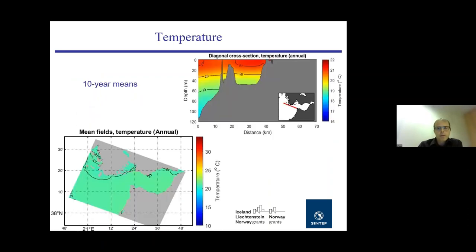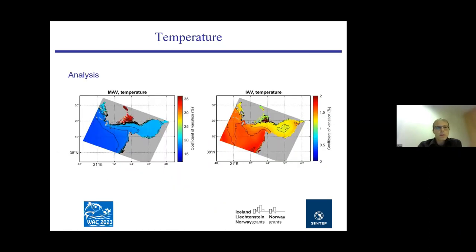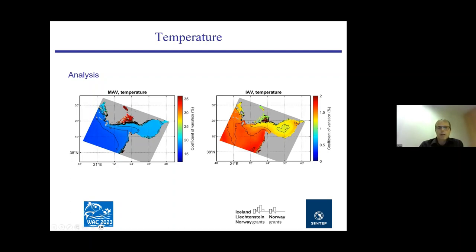For temperature, the mean fields and variability analysis show a coefficient of variation up to 35 percent inside the Mesolonghi area. This is because it is a really shallow area with strong air-sea interaction — it gets colder during winter — so the seasonal cycle shows up more clearly there.